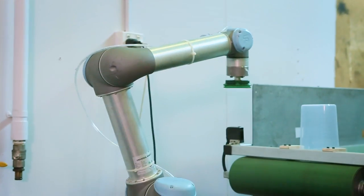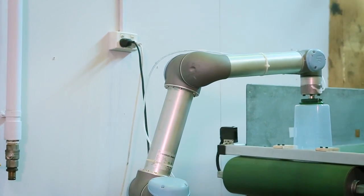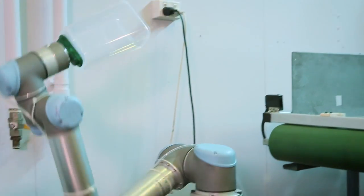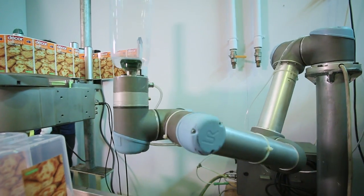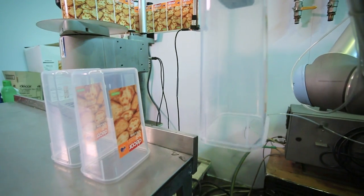It is increasingly popular amongst manufacturing businesses as it can be used to carry out a range of tasks. Prism now uses the UR5 to perform labeling tasks for the company's houseware production line.